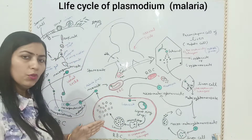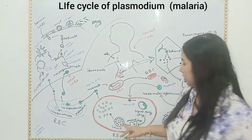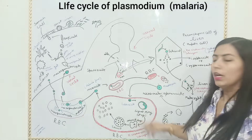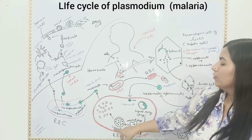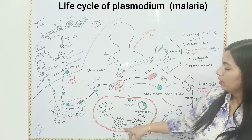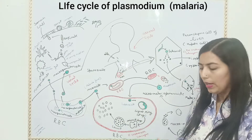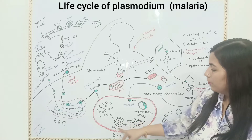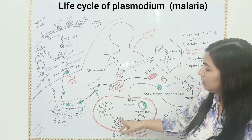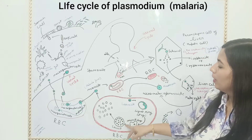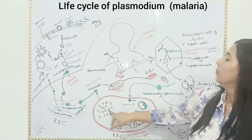After formation of the Signet-ring stage, changes take place in this structure and it changes into an amoeba-like structure. This state is known as the amoeboid state. This amoeboid structure changes again and forms a spherical or rounded structure, which is known as a schizont. The nucleus of the schizont divides or multiplies asexually, with formation of many nuclei. These nuclei take cytoplasm and form a new type of cell, which is known as merozoite.